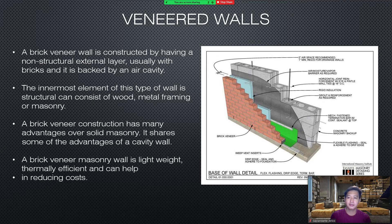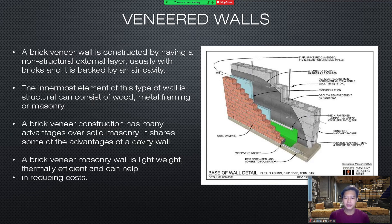Veneered walls: a brick veneer wall is constructed by having a non-structural external layer, usually with bricks, and it is backed by an air cavity. The innermost element of this type of wall is structural and can consist of wood, metal framing, or masonry. It has many advantages over solid masonry. It shares some of the advantages of a cavity wall. It is a wall that is lightweight, thermally efficient, and can help in reducing cost.